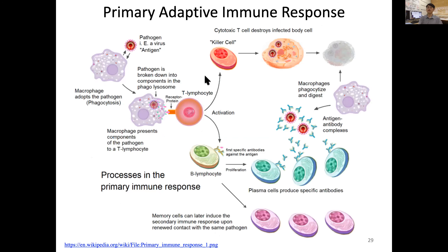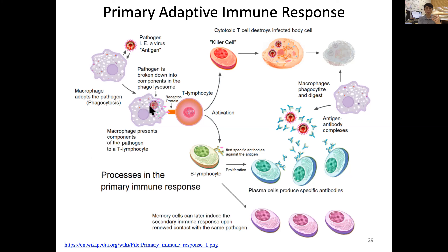Here is a diagram showing the primary adaptive immune response. Let's see the whole story of how things happen. First, a pathogen such as a virus enters our body as an antigen. A macrophage recognizes the pathogen and tries to phagocytose it — to engulf it. The virus as an antigen is broken down inside the phagocyte within a phagolysosome, and then those components — the parts of the pathogen — are presented out of the macrophage.